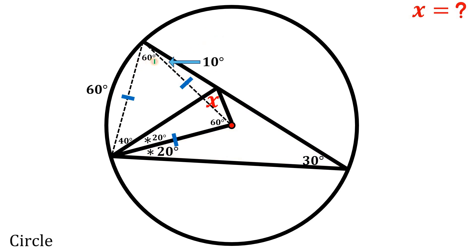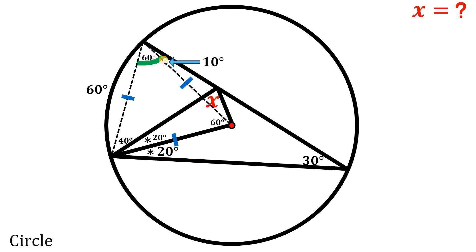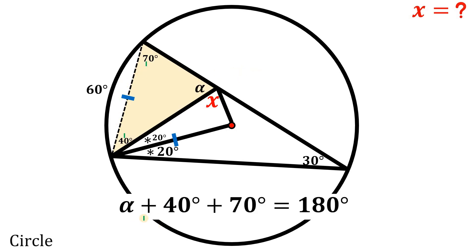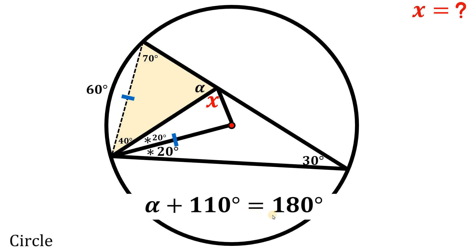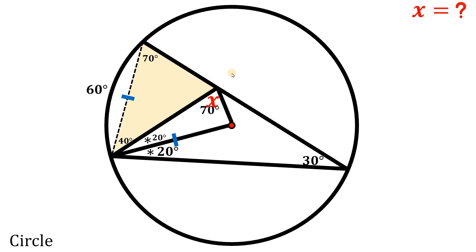Now if we add 60 and 10, this angle right over here totals 70 degrees. So the total of 60 and 10 degrees makes this angle 70 degrees. Now let's focus on this triangle — we know two angles: 70 degrees and 40 degrees. Let's call the third angle alpha. When we add all interior angles, the sum is always 180 degrees. So alpha plus 40 degrees plus 70 degrees equals 180 degrees. 40 plus 70 is 110 degrees, so alpha equals 180 minus 110 degrees, which simplifies to 70 degrees.